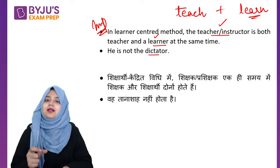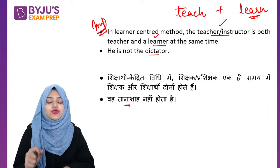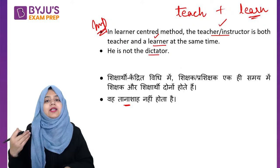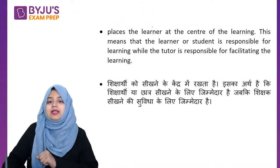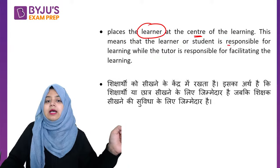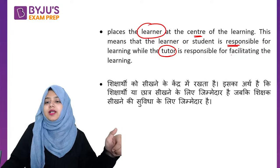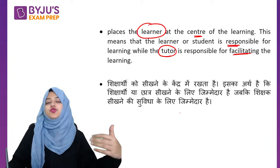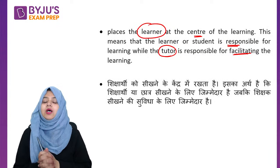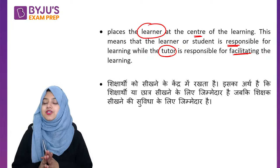So the teacher is not a dictator — it's not that only the teacher is telling you what to do. In learner-centered method, the child is also active and the teacher is also active. Learners are given the central position, learners are responsible for their own learning, while the tutor or teacher facilitates learning — providing opportunities and resources for learning, but the responsibility of learning lies with the student.